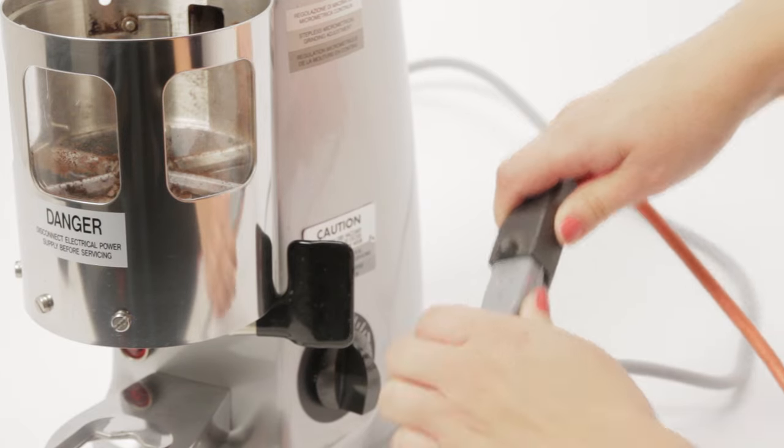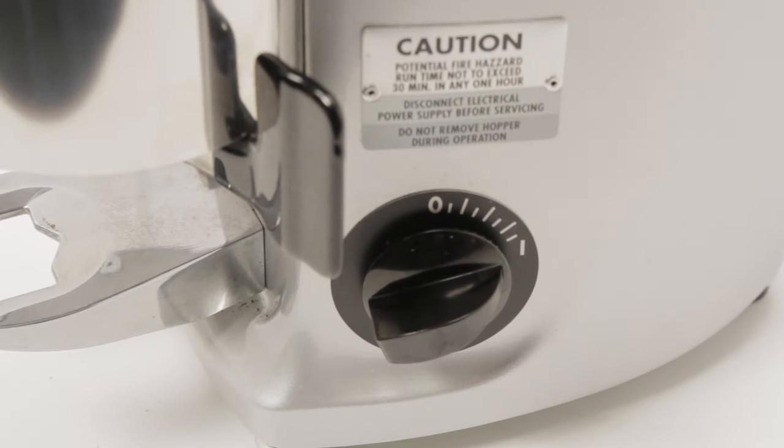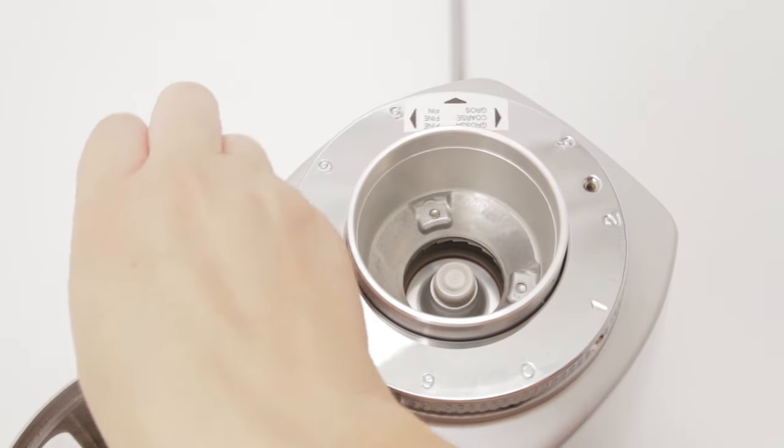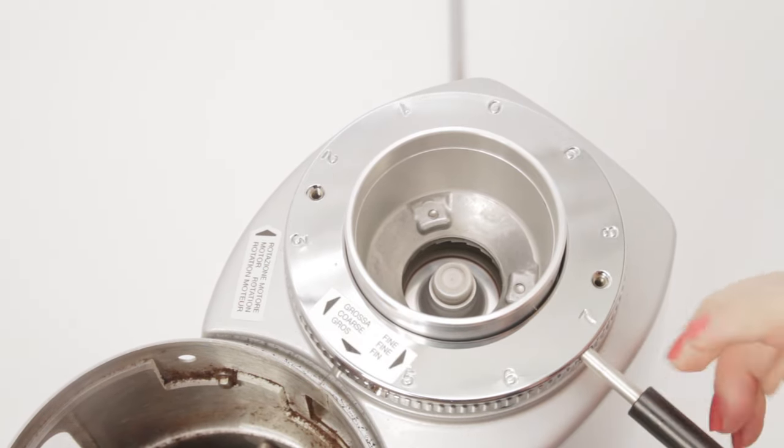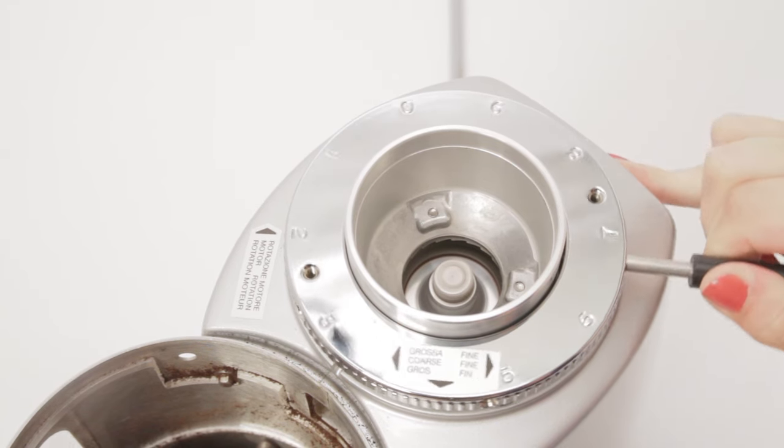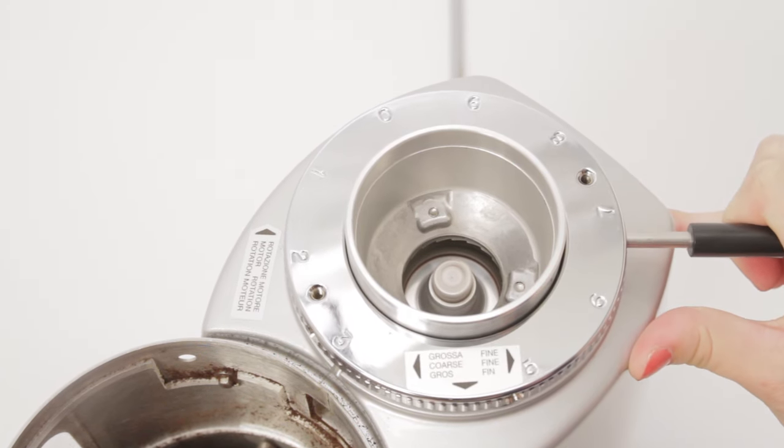Plug the grinder in and turn it on. Turn the adjustment collar slowly counter-clockwise until you hear the unmistakable sound of the burrs just touching. And then turn back a hair until the sound goes away.